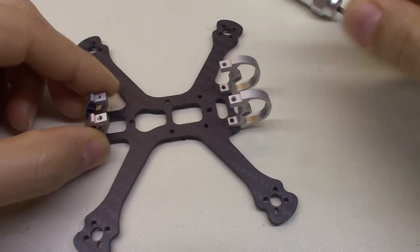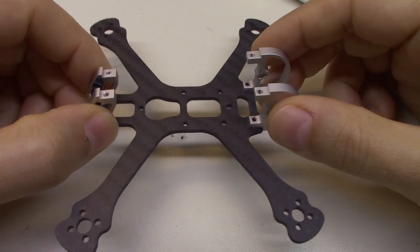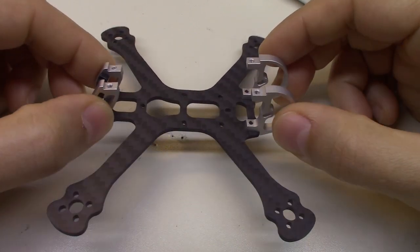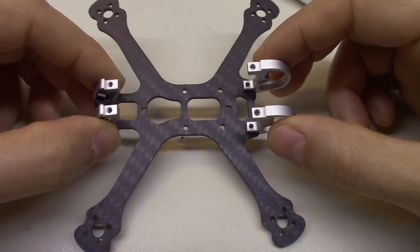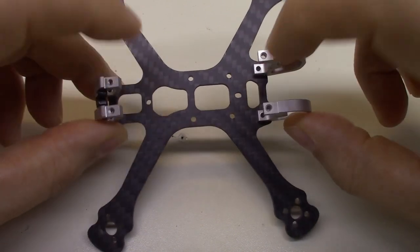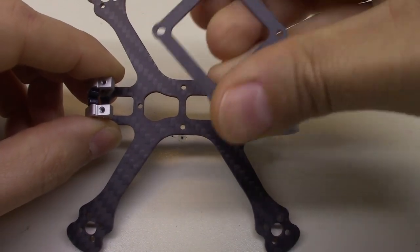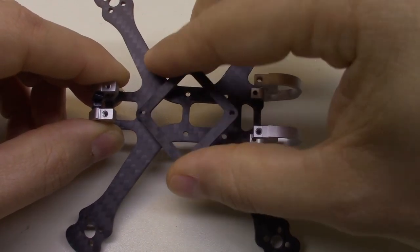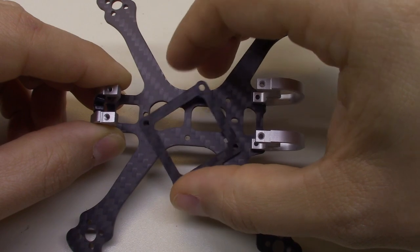In case you aren't familiar with it, the Armitan Tadpole is a 2.5-inch lightweight frame designed to have the capability to mount 16x16 stacks, as well as 1-inch whoop-style boards with this adapter.